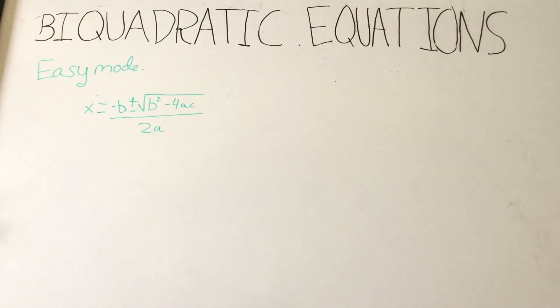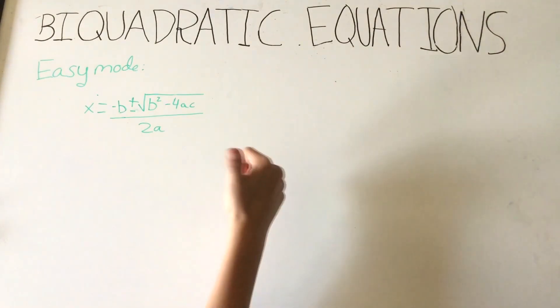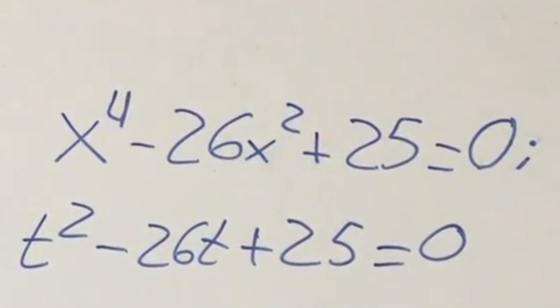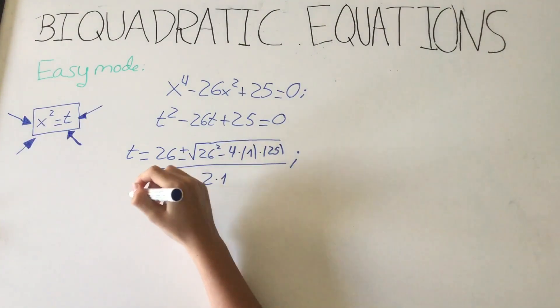First of all, to do a biquadratic equation you should know the quadratic formula. Do you know it? Fine, let's try to do an example. Now we have changed x for t, so x to the fourth would be t squared and minus 26x squared would be minus 26t. Now we apply the quadratic formula and we solve it.